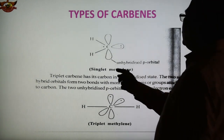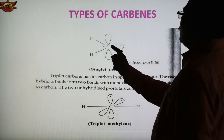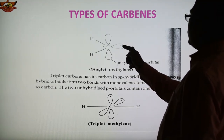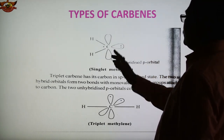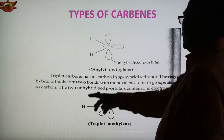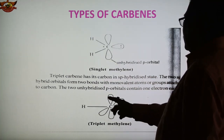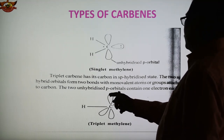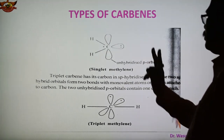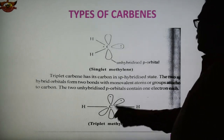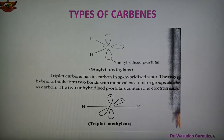To summarize the two types: in singlet methylene, both electrons are paired in one orbital and the other orbital is vacant — this is the unhybridized empty p orbital. In triplet methylene, the 2 electrons are unpaired and present separately in both orbitals, giving 2 unpaired electrons. Therefore this type of carbene is known as triplet carbene.